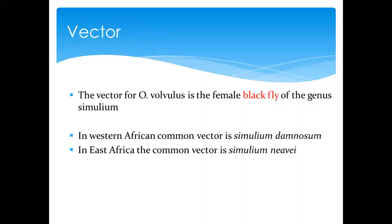The black fly's biological name is Simulium — the Simulium species. In West Africa, the common vector is Simulium damnosum, while in East Africa it is Simulium neavei, but it is most common in West Africa. The causative organism itself is Onchocerca volvulus.